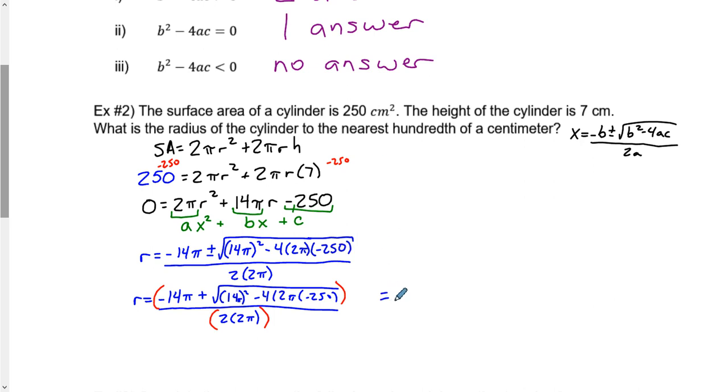The only reason I'm doing it here is because our numbers are going to be a little bit funky. We have to remember that it's plus or minus the square root. So we have the plus there. Then we have negative 14π, subtracting the square root of 14π squared, subtracting 4 times 2π times negative 250, all over 2a.